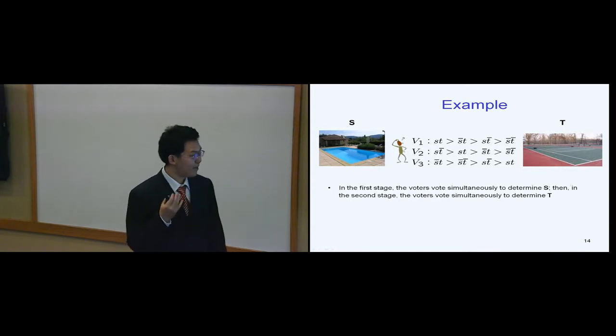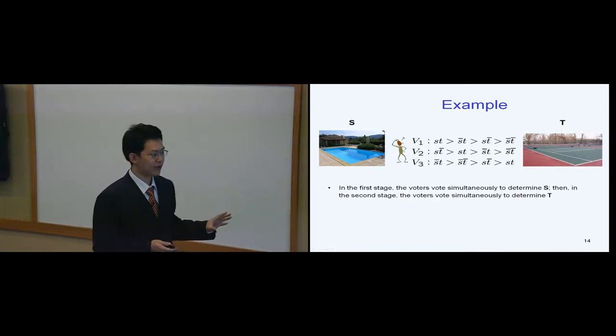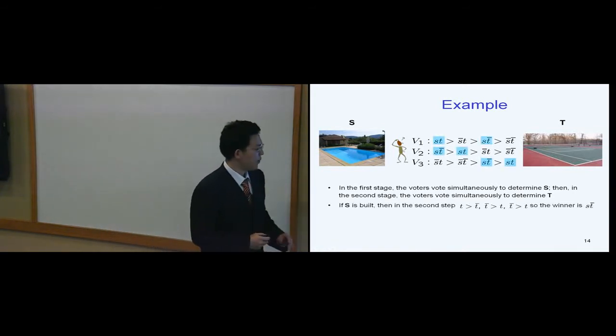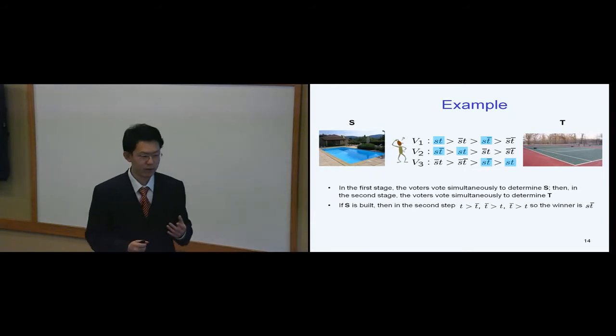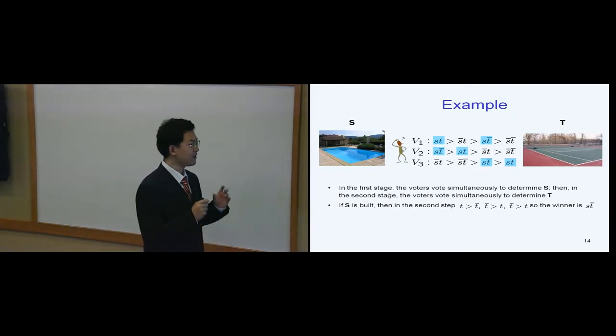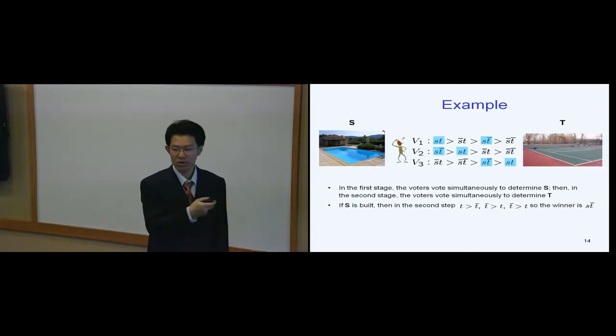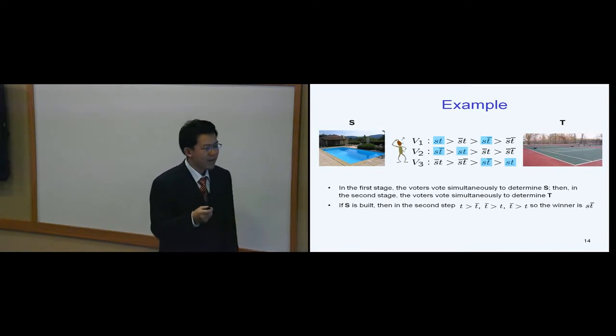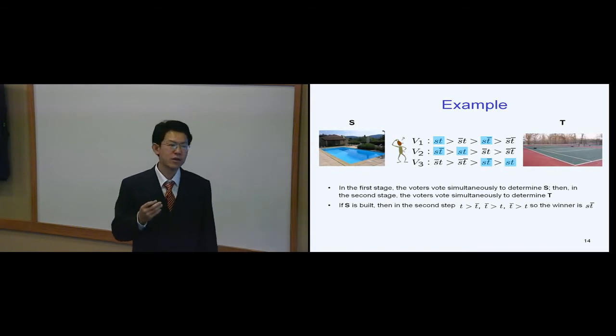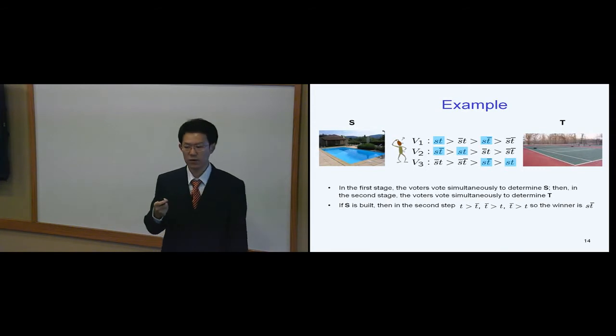Let me suppose that I am, pretend that I am the first voter, and I'm going to show you what is my way of reasoning. So here is what I do. Suppose the swimming pool is already built. Then we are going to vote to decide whether or not should we build a tennis court. In the second stage, I'm actually comparing between ST and S0T, because we already assumed that the swimming pool is built. Remember that the majority rule is actually strategy-proof, which means that I am going to vote for my preferred candidate, which means that I would prefer building a tennis court to not building.